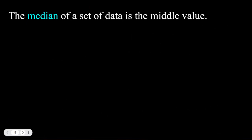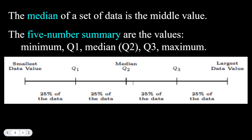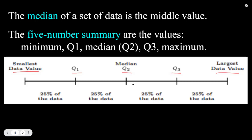The median of a set of data is the middle value—if you put them all in order and find the middle value, that is the median. The five-number summary gives a rundown of how spread out the data is: the minimum (lowest value), Q1 (separates bottom 25%), the median (middle value), Q3 (separates bottom 75% from top 25%), and the maximum. Quartiles are not necessarily equally spaced when placed on a coordinate graph.